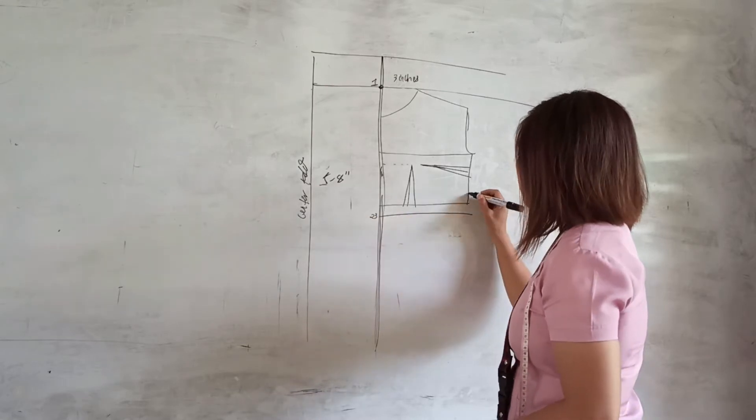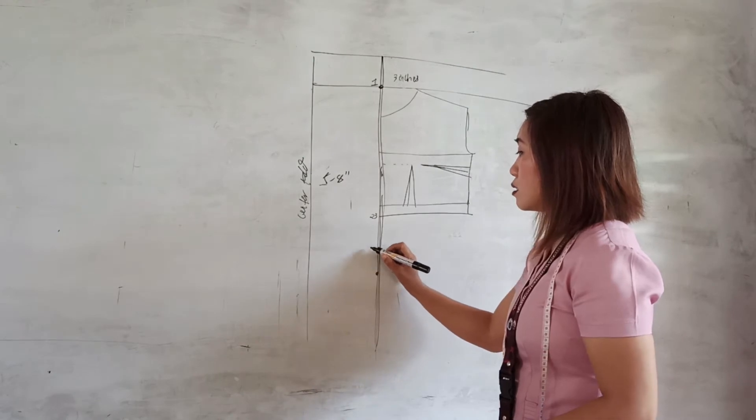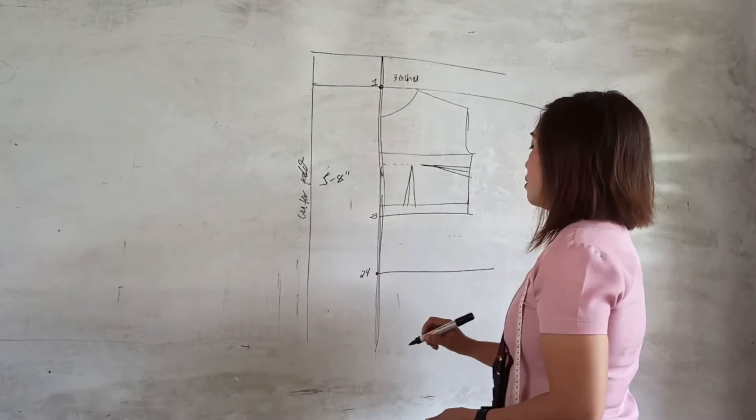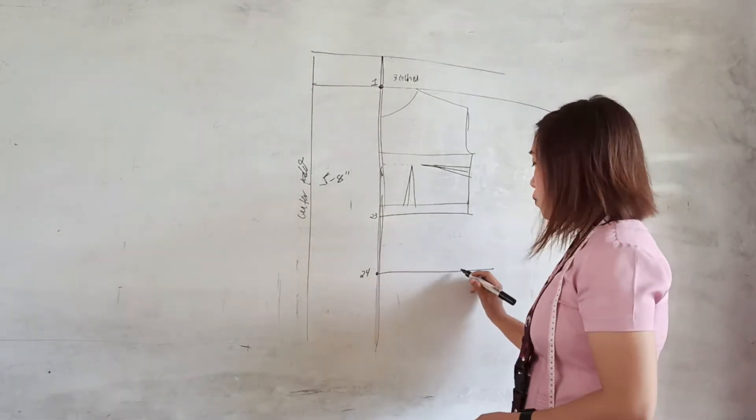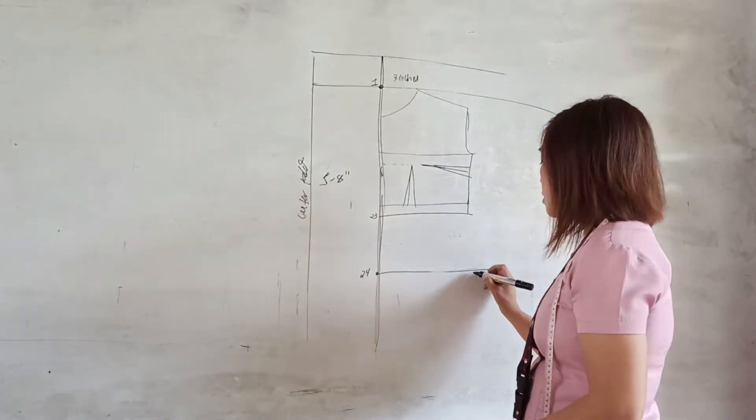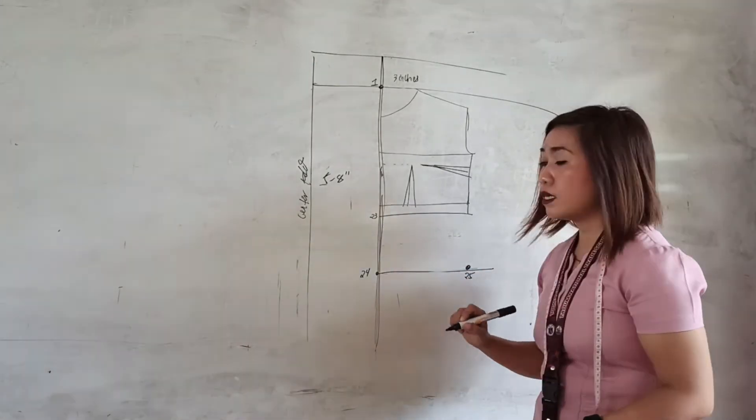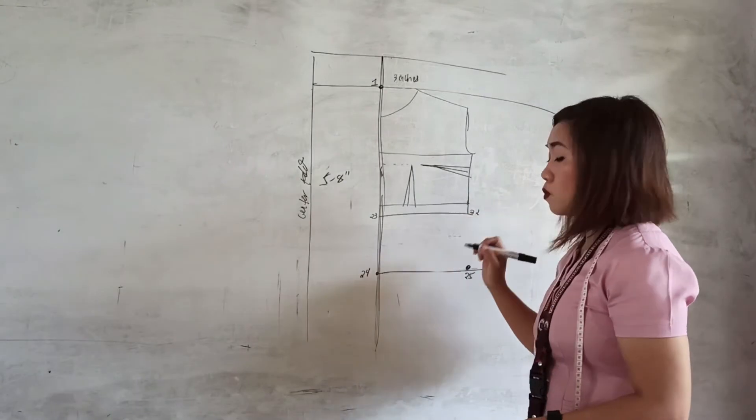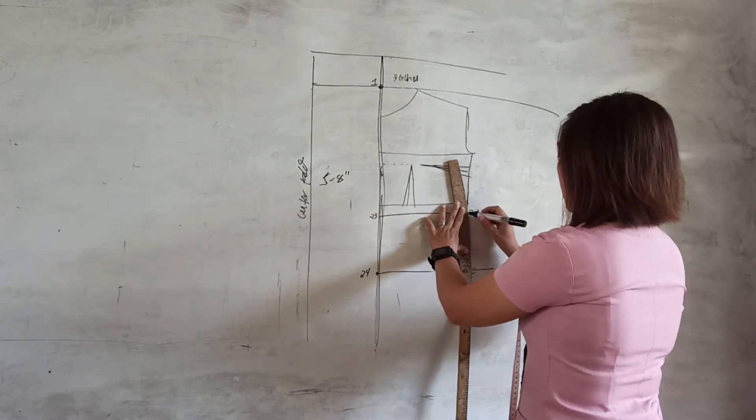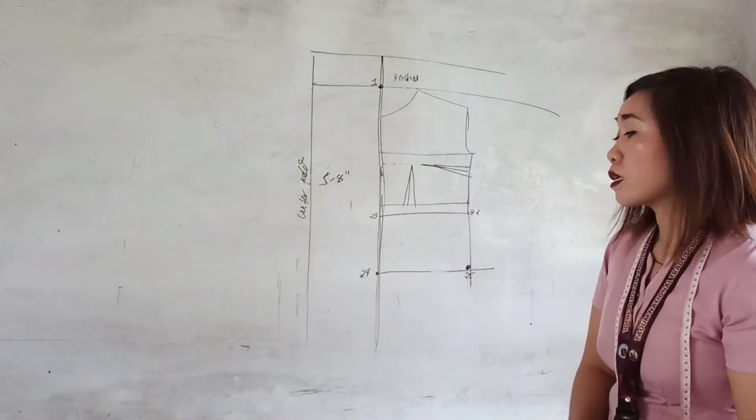The last number on our basic pattern is twenty-three, so from twenty-three to twenty-four we need to add six inches, mark point twenty-four, and square the line. From point twenty-four going right, measure one-fourth of your hip measurement and mark point twenty-five. Then connect points twenty-two and twenty-five using your hip curve, forming a slightly curved line.